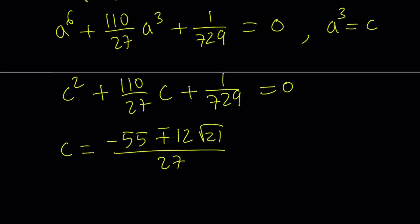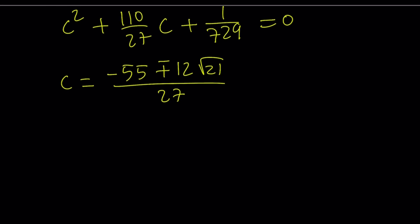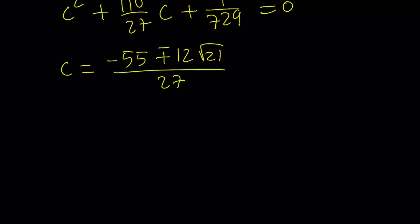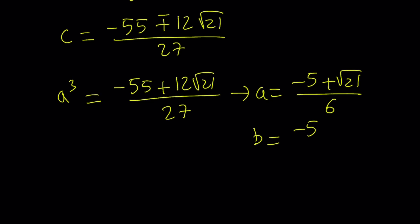This is the c value. Remember, a cubed is equal to c, but there are two c values. So 2c or not 2c. I was able to use it. I'm going to set one of these equal to a cubed. Suppose a cubed equals negative 55 plus 12 root 21 over 27. By the way, it doesn't matter which one is a cubed and which one is b cubed, because y is equal to a plus b. Commutative property. From here, we get a equals negative 5 plus square root of 21 over 6. And b is just going to be the conjugate of this, because their cubes are conjugates, and they are conjugates as well. This came up in a recent video as well.